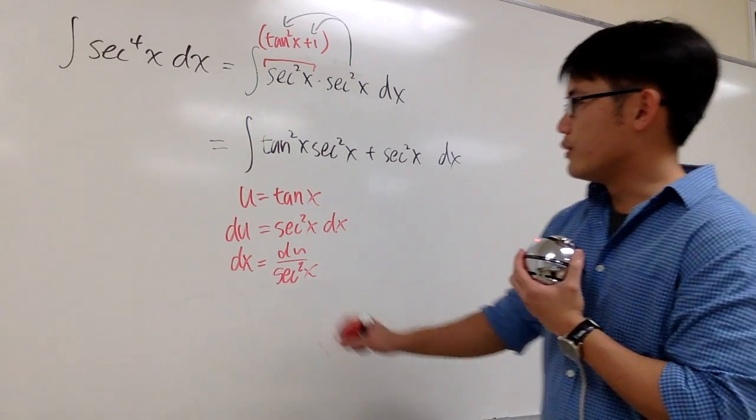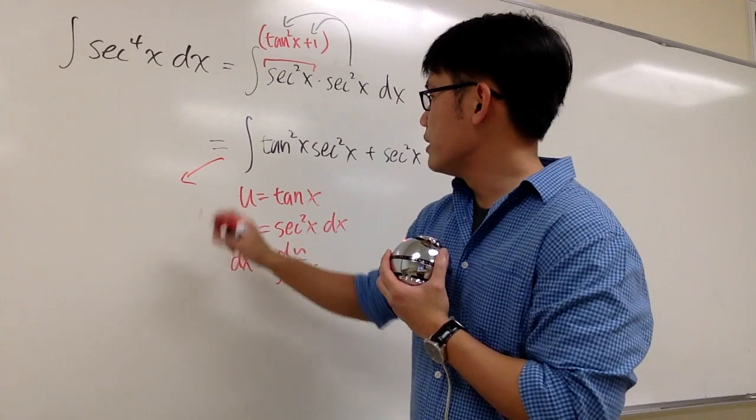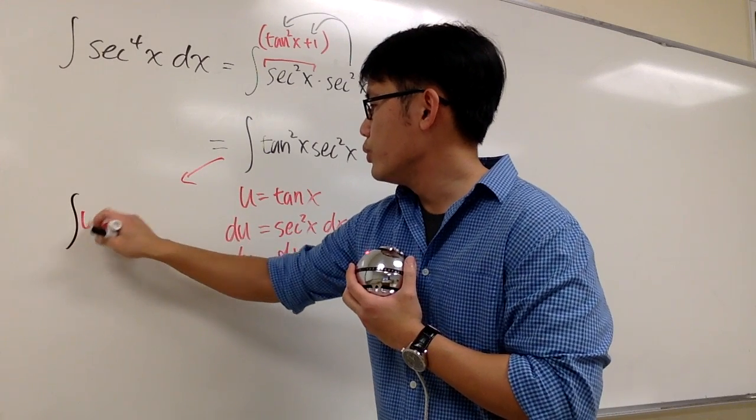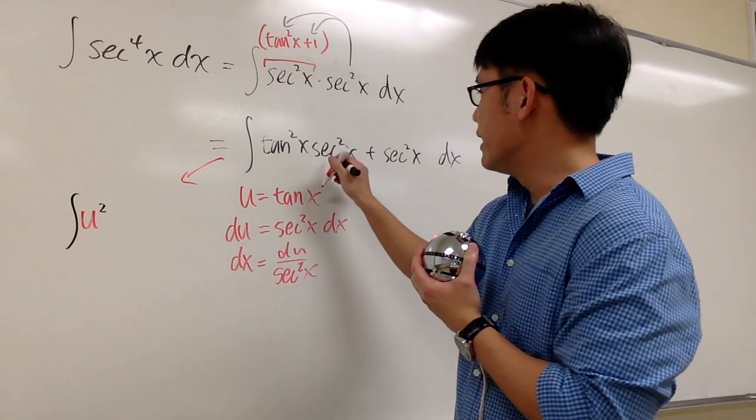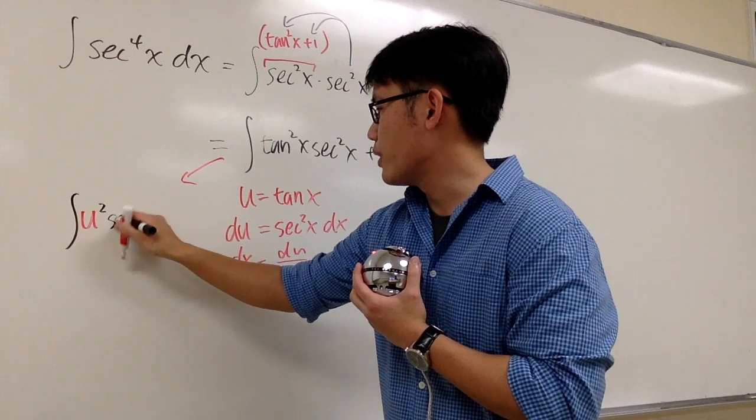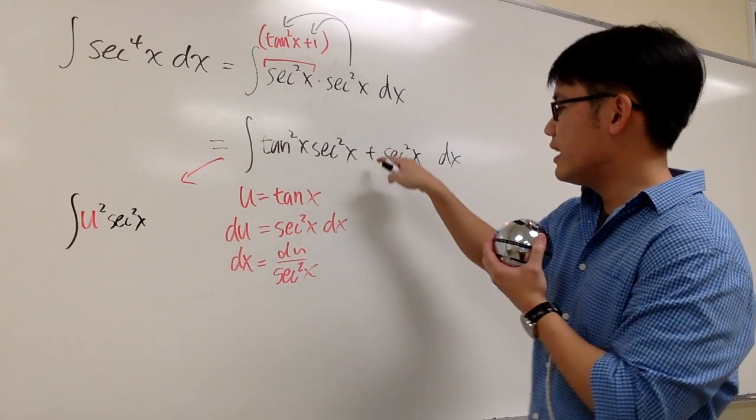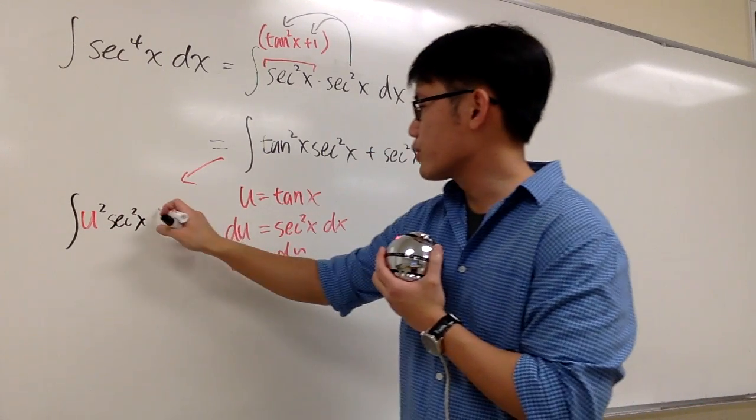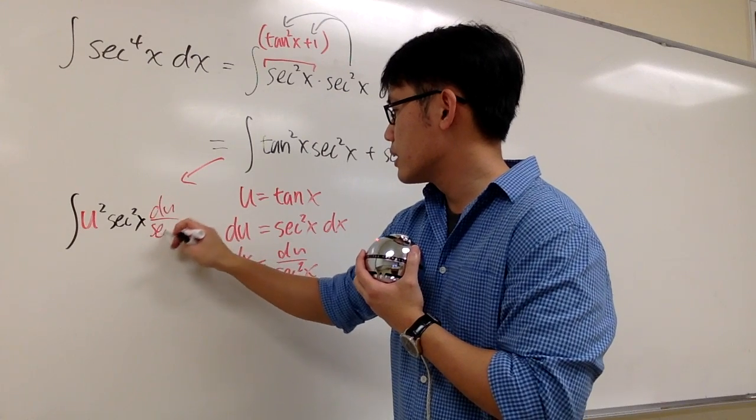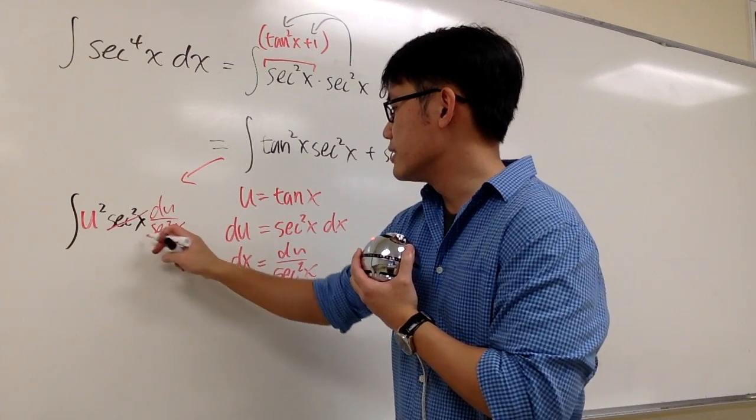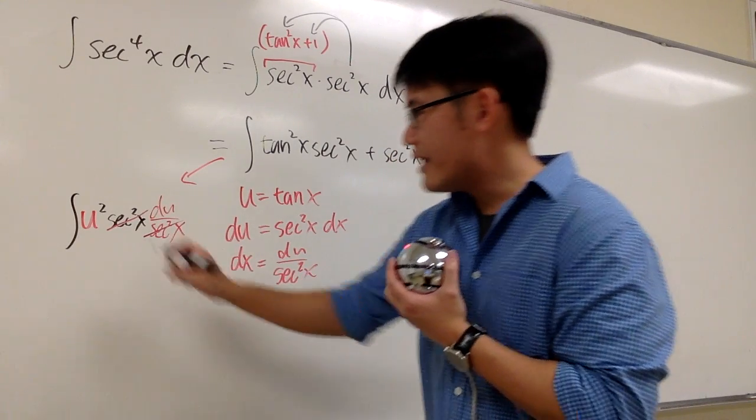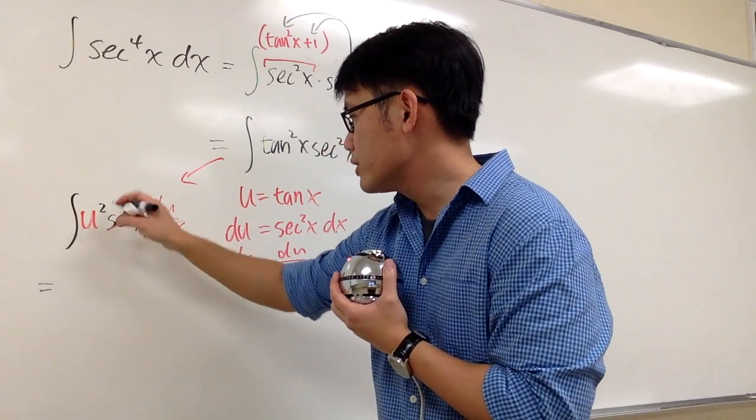So in other words, if you look at this part, this is going to be the integral of u to the second power, and then secant squared is just secant squared, but then technically you have the dx, and dx is du over secant squared. And then you see the secant squared cancels out. And then this is just the integral of u squared.